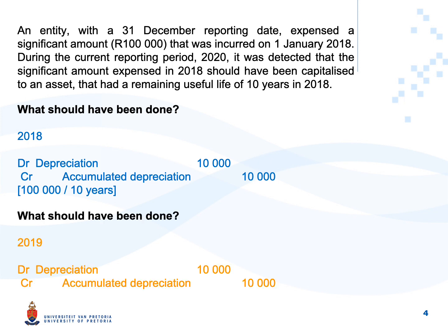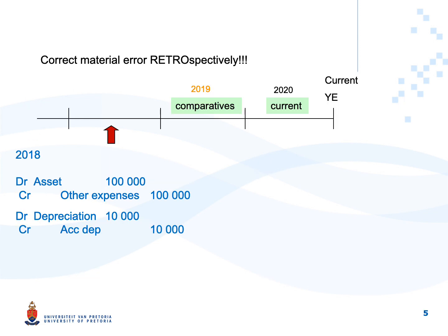We should also have had depreciation for our comparative period 2019: debit depreciation, credit accumulated depreciation. We will also need depreciation in 2020, but that is our current period, so we can just post that journal and fix it while we are busy with the current year. Looking at the timeline: 2020 is our current year, our comparative year is 2019, and the error occurred even before that — in 2018.